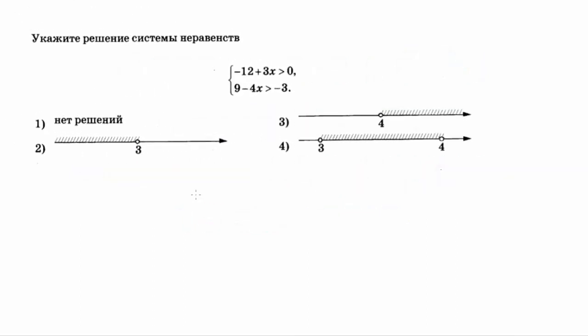Добрый день! Сегодня у нас подготовка к ГИА, математика, задание 15. Нужно указать решение системы неравенств. Дана система: минус 12 плюс 3x больше 0, и 9 минус 4x больше минус 3. Варианты ответов: 1 — нет решения, 2 — от минус бесконечности до 3 (3 не входит).